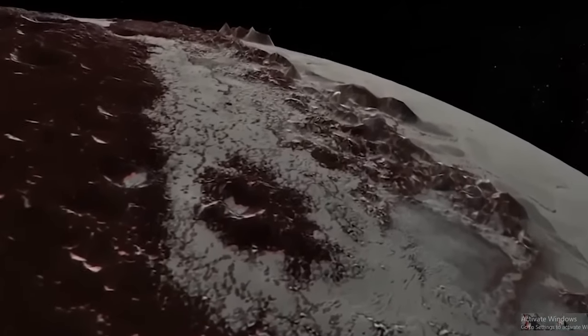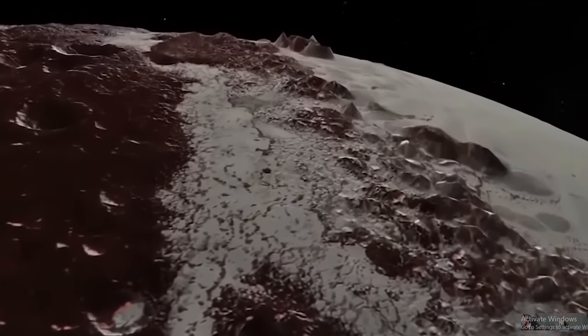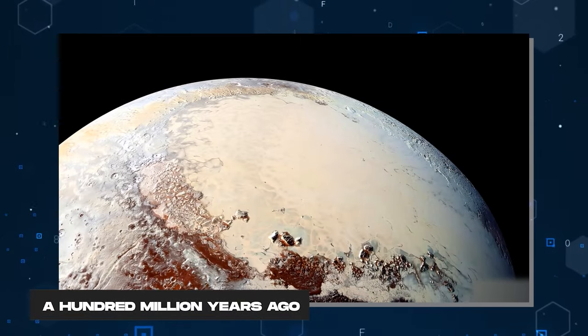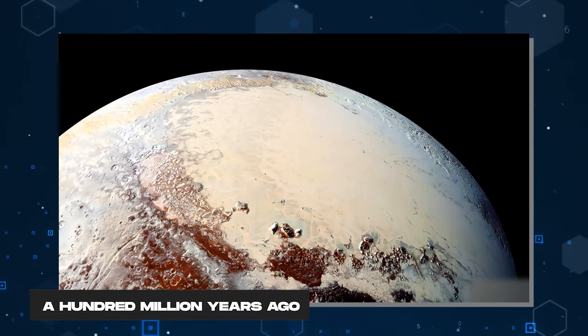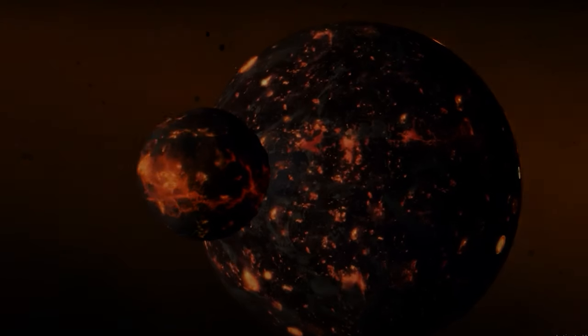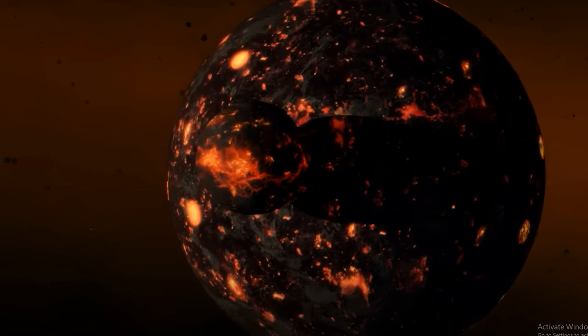Remarkably, Tombaugh Regio lacks the telltale signs of craters, indicating its relative youth in geological terms. According to the prevailing hypothesis, Sputnik Planitia took shape approximately a hundred million years ago, following a cataclysmic collision between Pluto and a sizable celestial body.